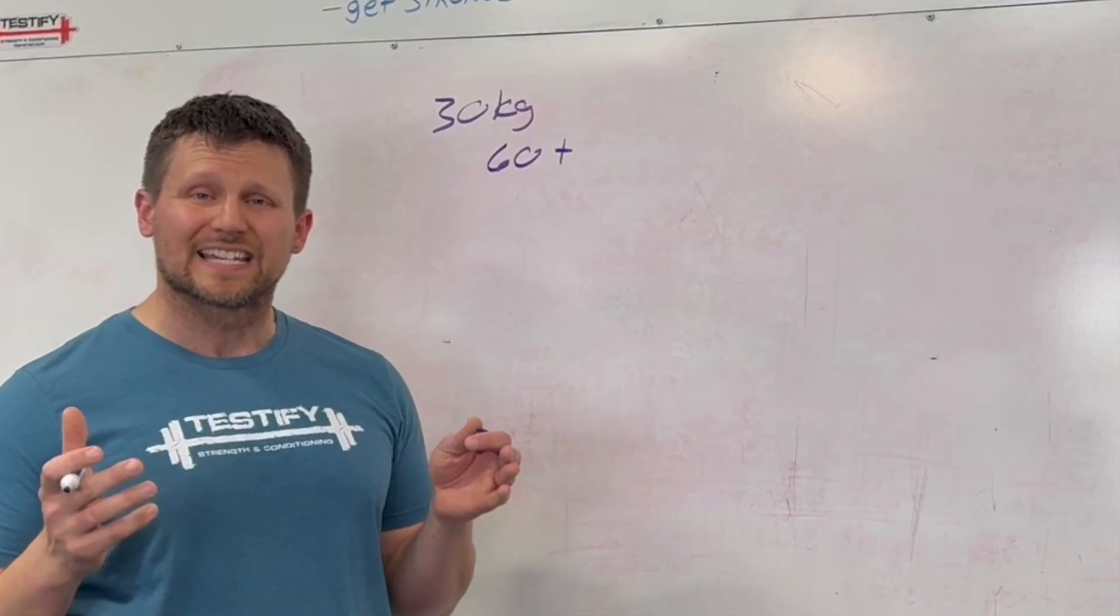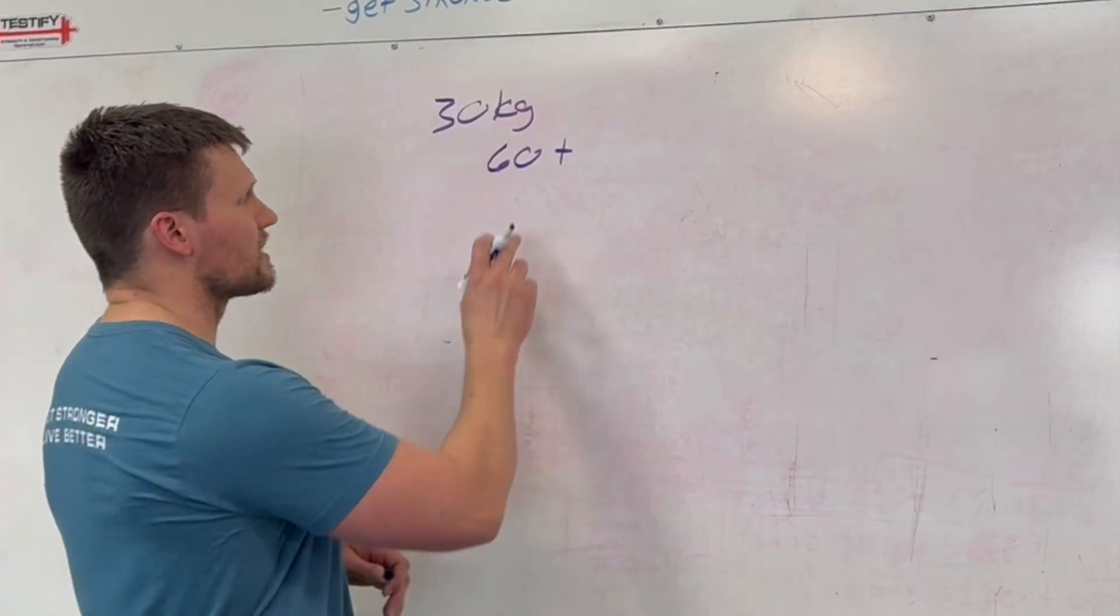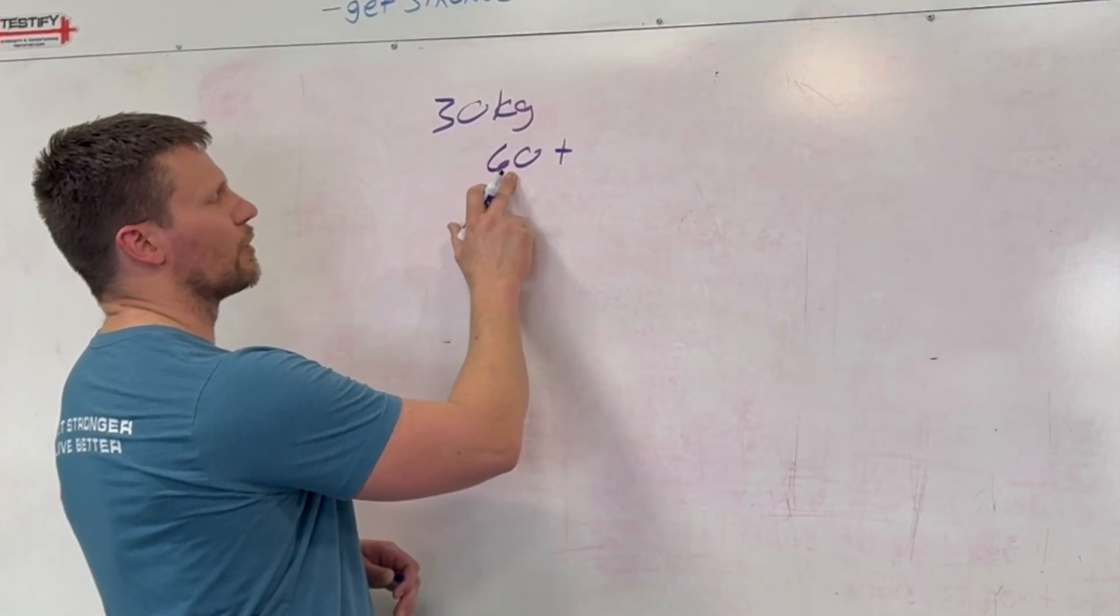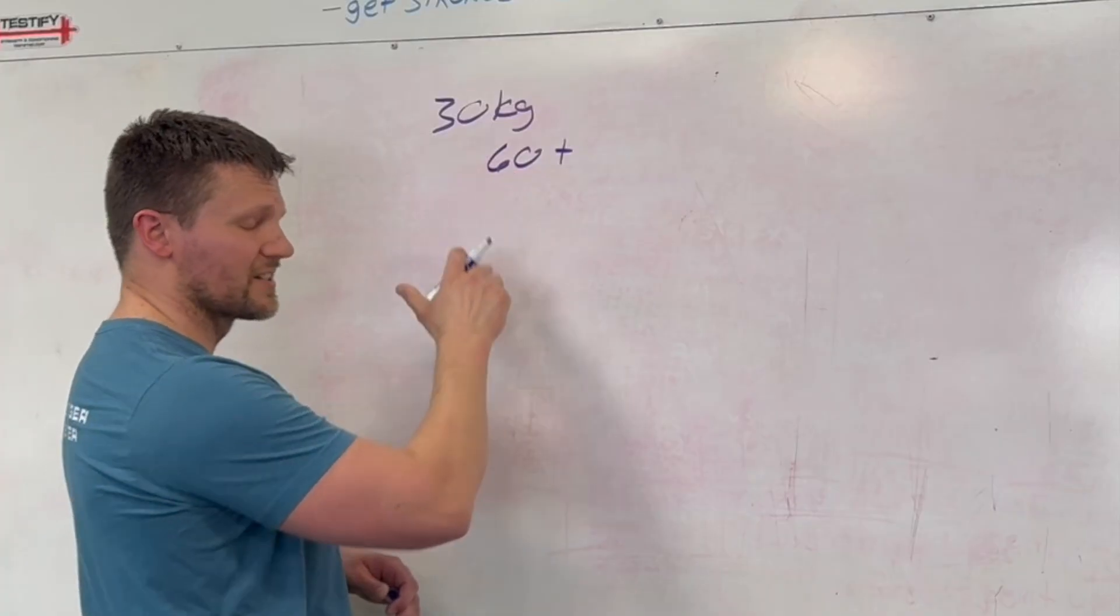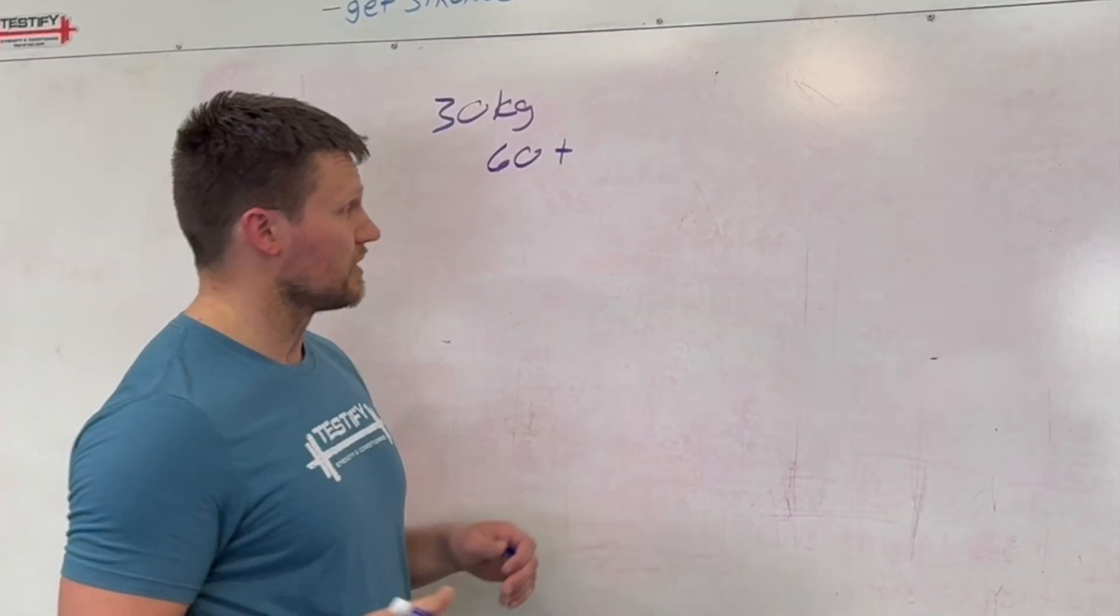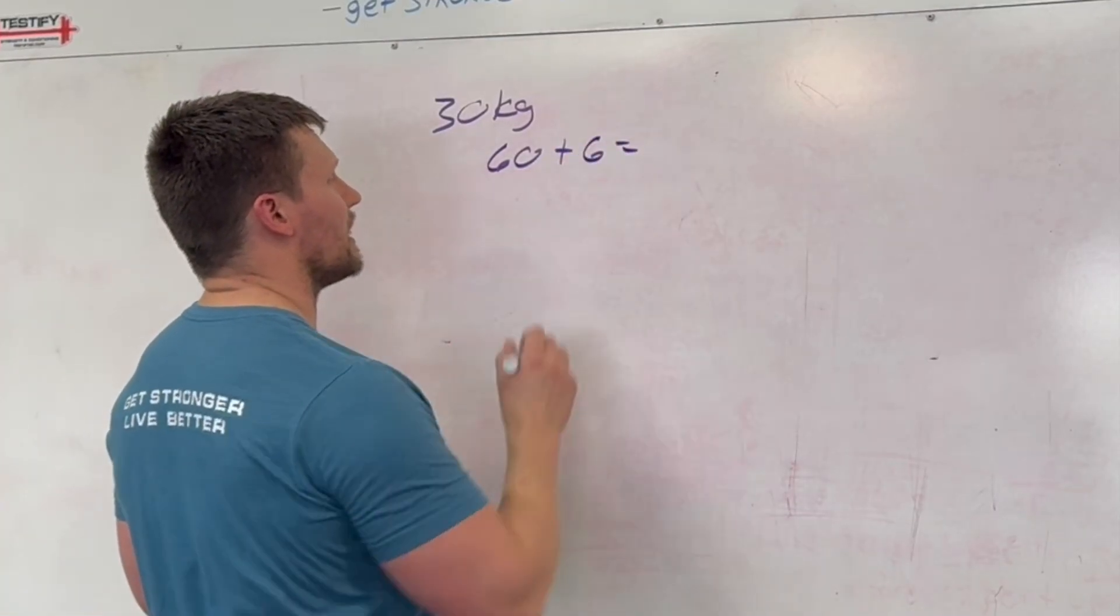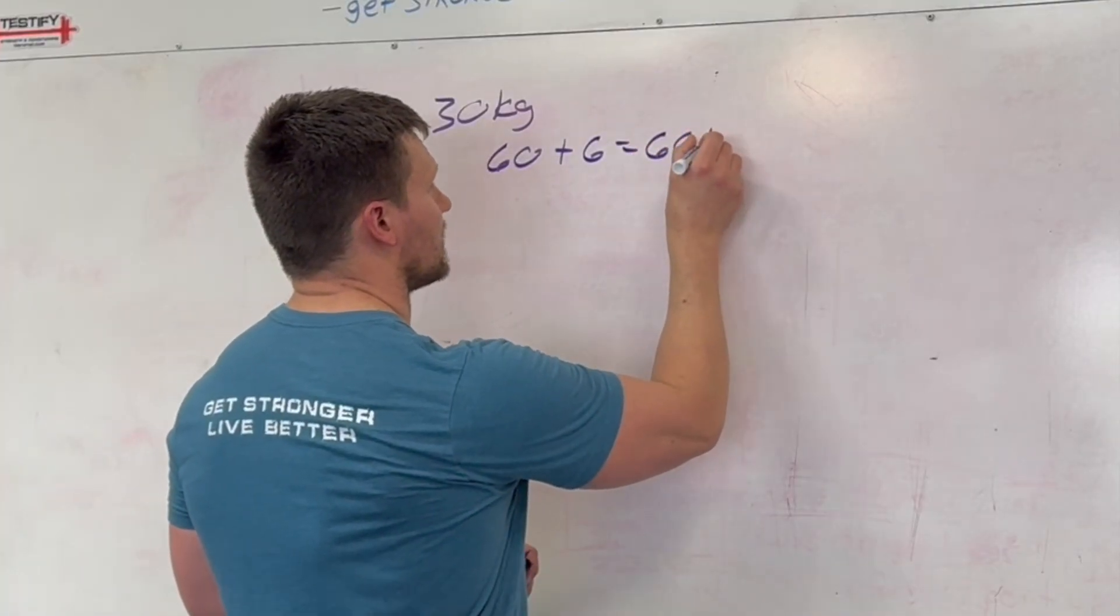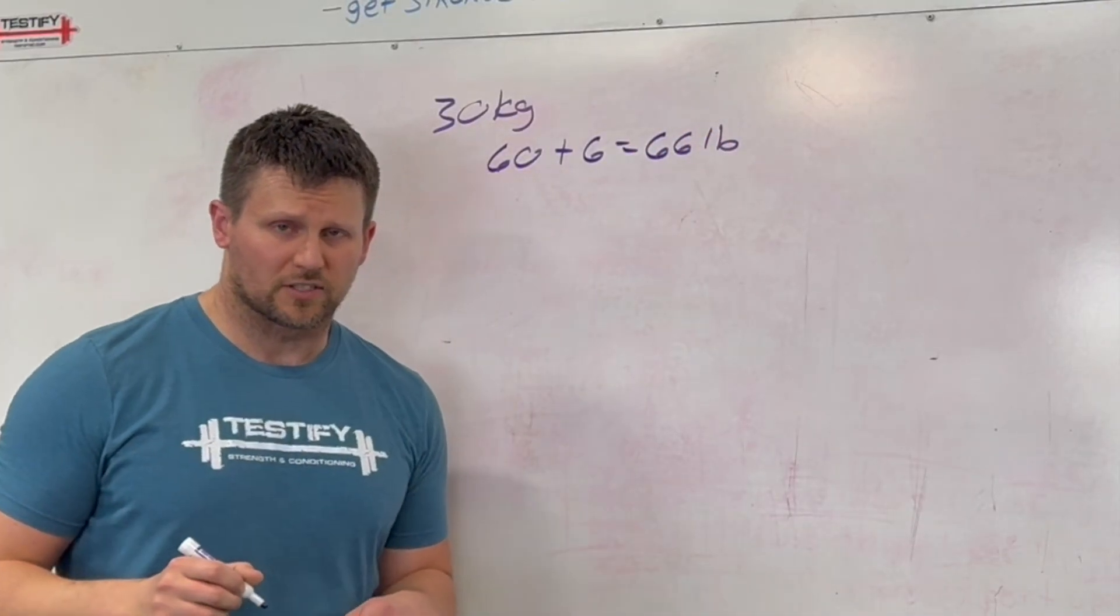Now what do you do with that 60? You take that 60 and you find 10%. You may remember how to do this. There's an invisible decimal right here. Move the decimal over one spot so you get the number 6. So we get 60 plus 6 and you get 66 pounds.